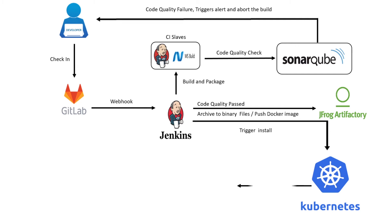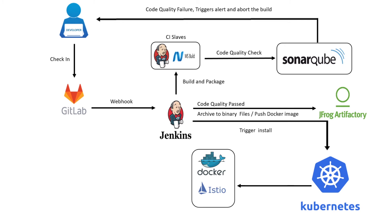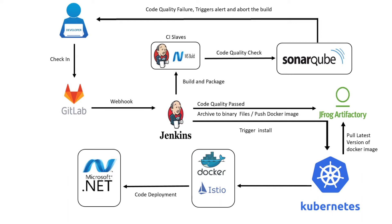Create a deployment on the on-prem Kubernetes cluster, which will create a replica set, which in turn creates the pods using images from the JFrog container registry. The .NET deployment will be exposed to the external world using the Istio gateway and virtual service. The routing rule will be defined in Istio so that when the Istio gateway URL is accessed with the application name in the request, it will be routed to the .NET application pod using layer 7 load balancing.